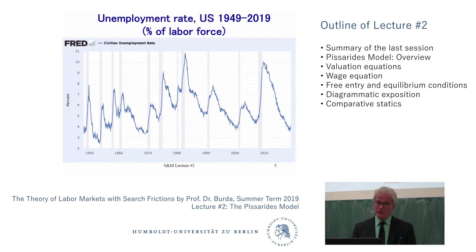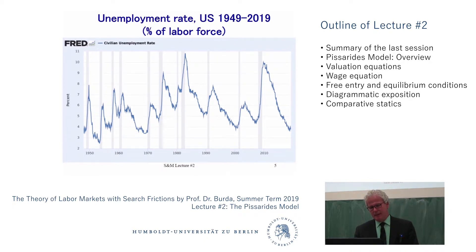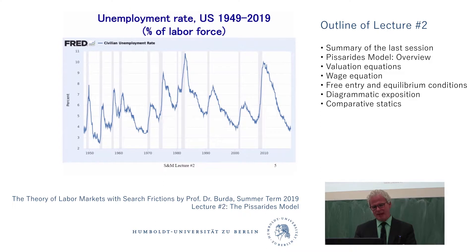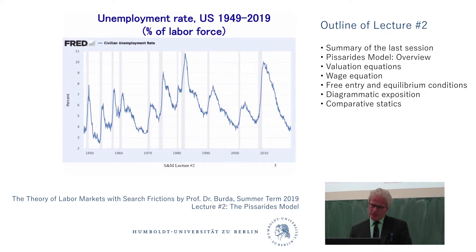If you look at the data — the US, but Germany looks very similar — the rises in unemployment are quite drastic. This doesn't look like the stochastic processes we study in other courses. The rises occur during recessions and happen within six to twelve months, and then unemployment starts falling at a rather slow rate. The best example is the Great Recession.